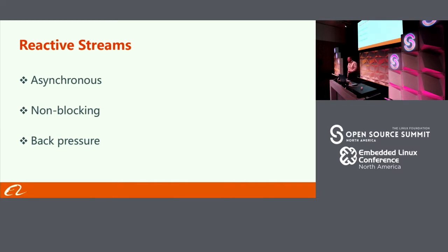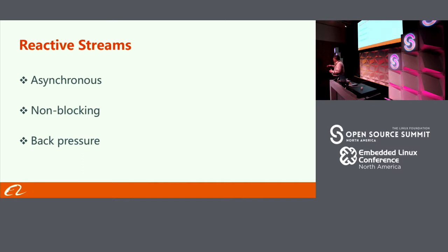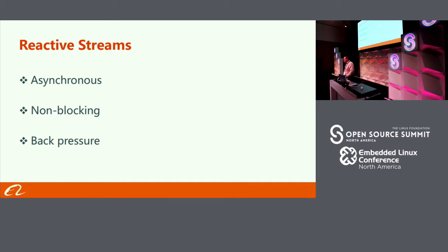What makes reactive streams stand out is the concept called backpressure. To implement asynchronous non-blocking I/O, you need to query your OS to know which processes are blocked and which are ready. But what about devices and services you can't query? You can't subscribe to an event on the Pi's OS to know when a thread is ready. So you need a measurement to know when it's ready — and that's what backpressure is. Backpressure is the consumer telling the producer: I am ready, give me a couple of frames.